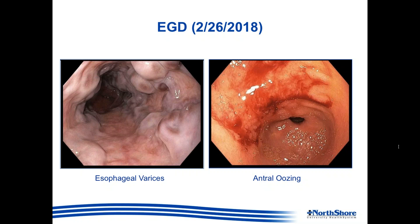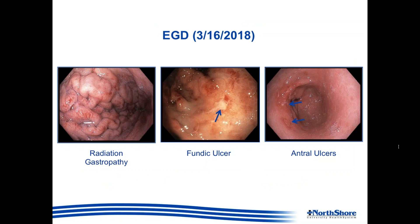Unfortunately she continued to have intermittent stabbing epigastric pain and she presented to the ER just a few weeks later with similar pain. A follow-up EGD was performed shortly thereafter. Here are some images from that second endoscopy. On the far left there is evidence of radiation gastropathy. There was also the finding of a clean-based ulcer in the fundus of the stomach. On the far right, in the antrum where we had previously seen oozing, we were now seeing more visible ulcers.